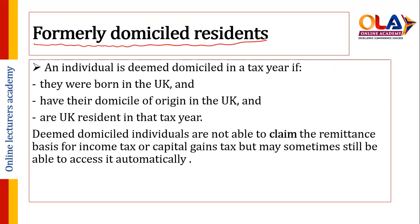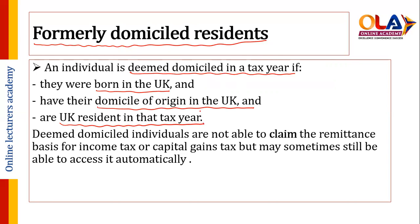The second condition is formerly domiciled resident. An individual is deemed domicile in a particular tax year if they were born in UK, have a domicile of origin in UK, and are UK resident in that tax year. So if a person has a former domicile of origin in UK and in the current year is also a UK resident, they will be called a deemed domicile individual in that particular year.